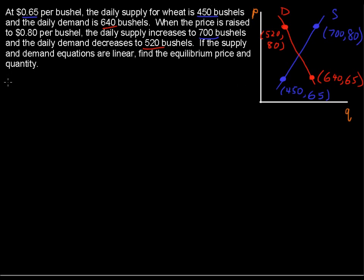So let's start with the supply. For the supply, we have the slope. The slope of the supply equals y sub 2 minus y sub 1, or the difference in y's. I'm going to go 80 minus 65 just because it makes it a little bit easier. So 80 minus 65 and then 700 minus 450.